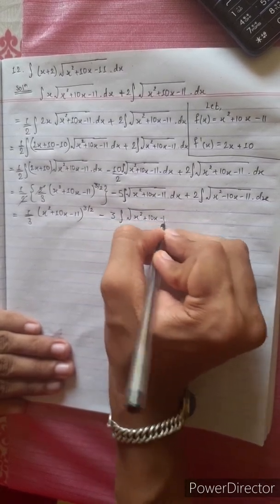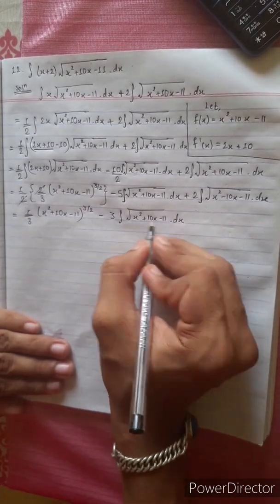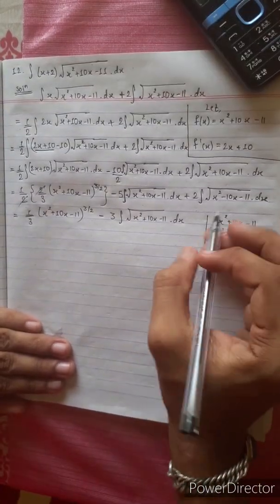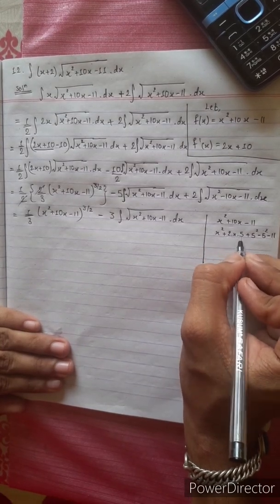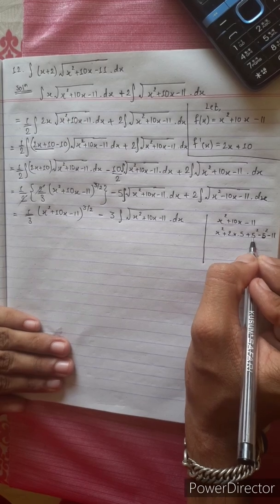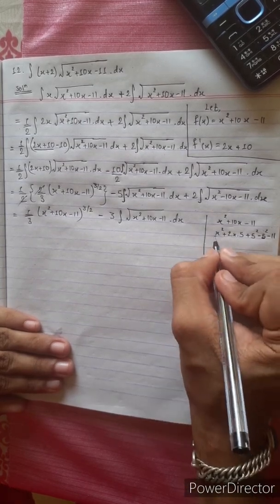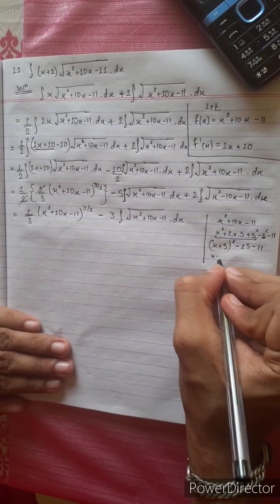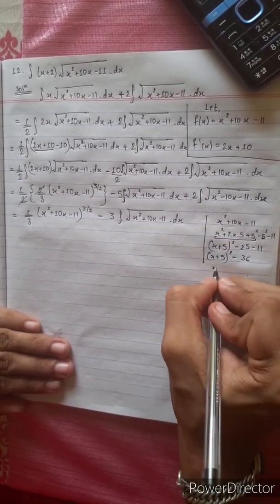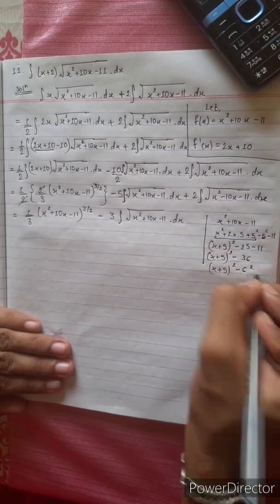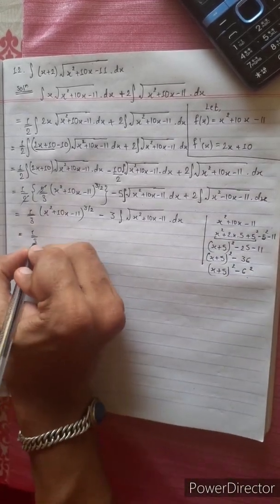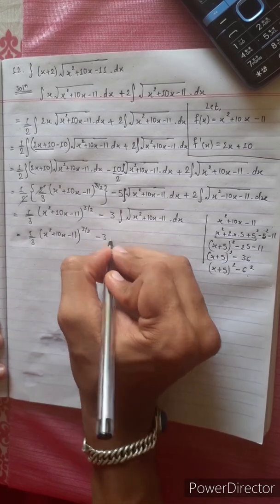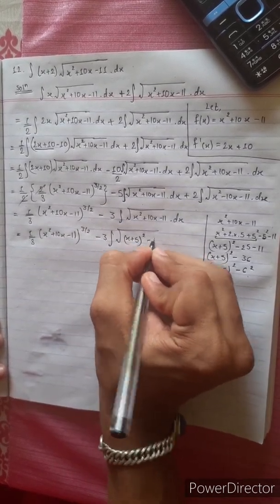x cubed: x squared plus 10x minus 11 dx. This is how to solve this problem using the completing square method. x squared plus 2x into 5 — half of 10 equals 5 — plus 5 squared minus 5 squared. We cut 5 squared minus 5 squared to form (x plus 5) squared minus 25 minus 11, giving (x plus 5) squared minus 36, which equals (x plus 5) squared minus 6 squared. This equals one-third times (x squared plus 10x minus 11) to the power 3 by 2, minus 3 times the integration of (x plus 5) squared minus 6 squared.